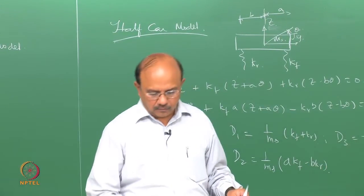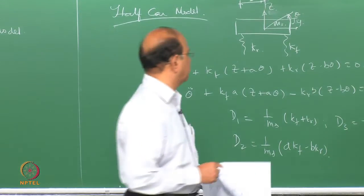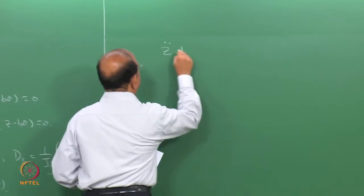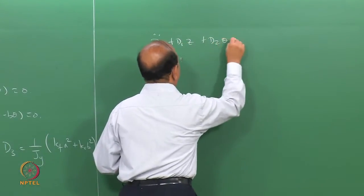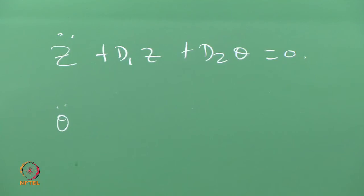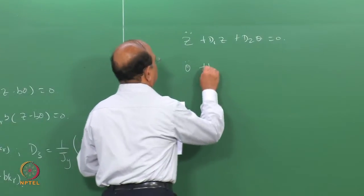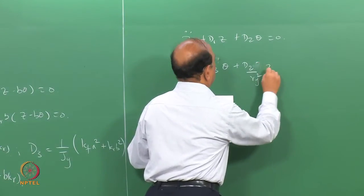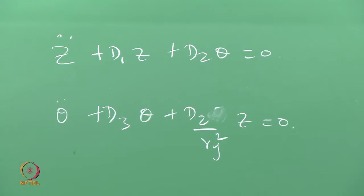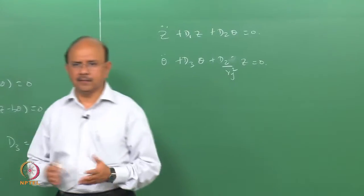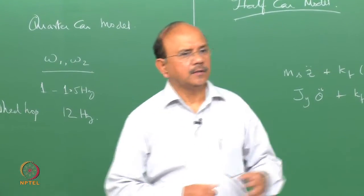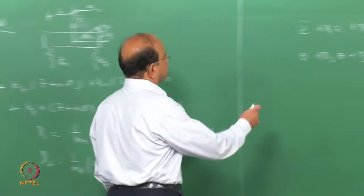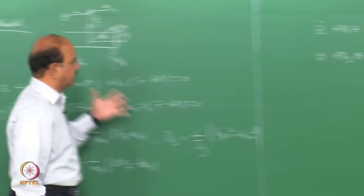This is a free vibration problem because we are finding eigenvalues and mode shapes. I replaced jy by m·ry², where ry is the radius of gyration. The two equations are coupled because both contain z and theta terms. If I want to uncouple the equations, I should set d2 equal to zero, which means a·kf equals b·kr. In that case, both equations uncouple.